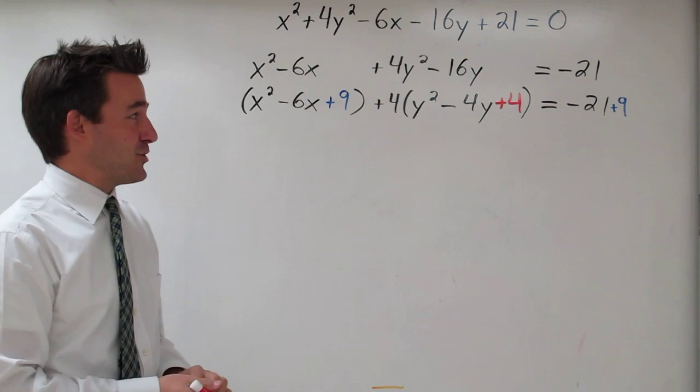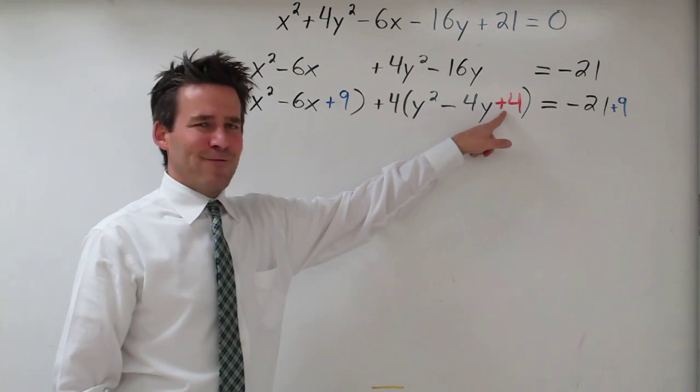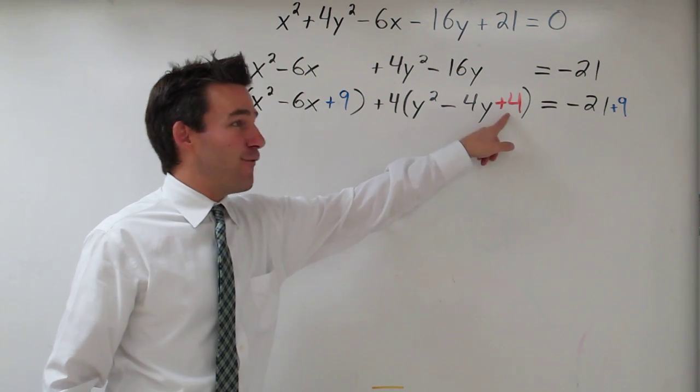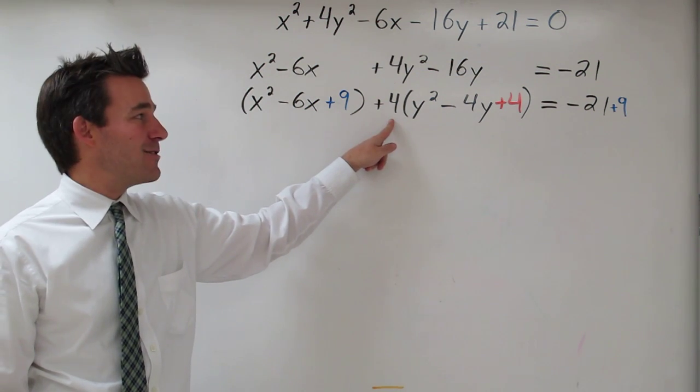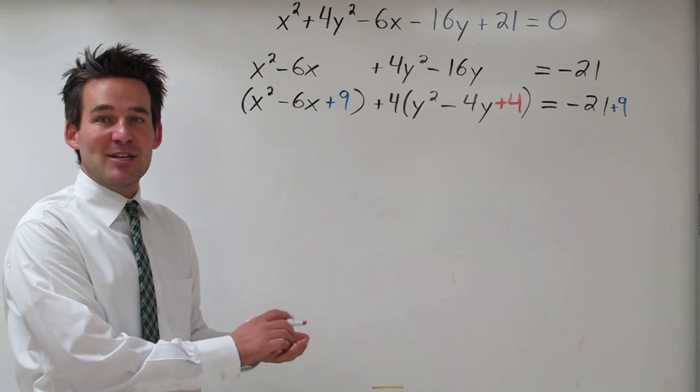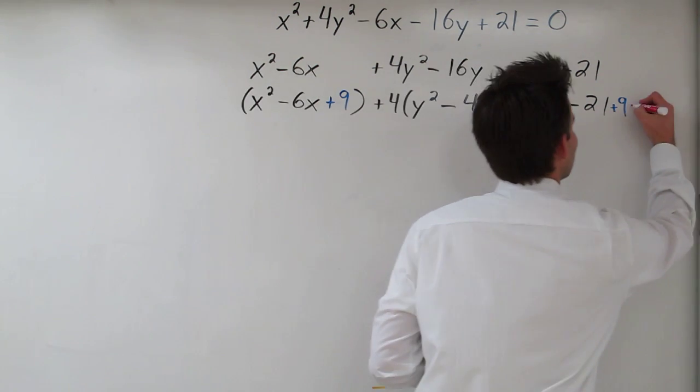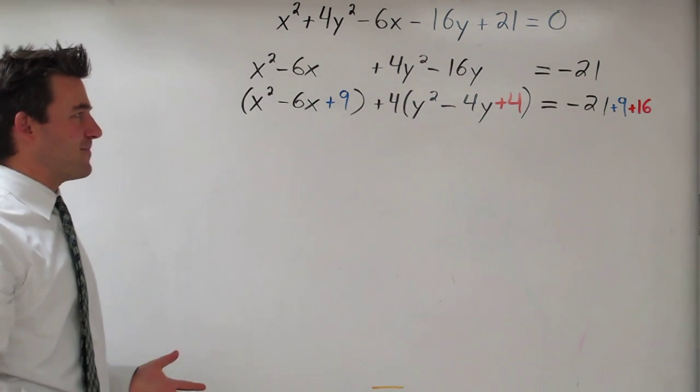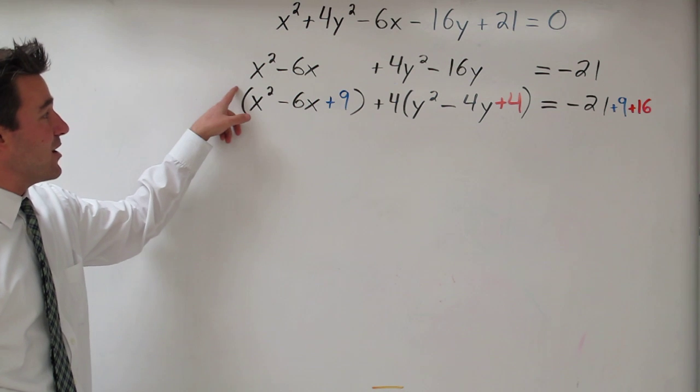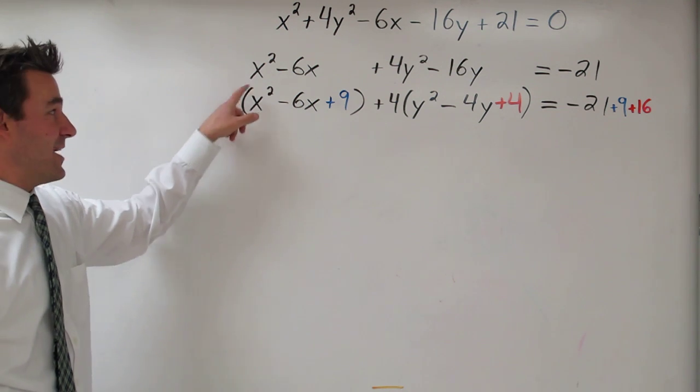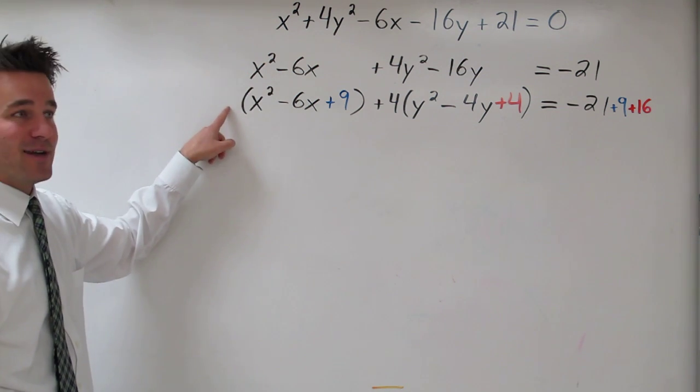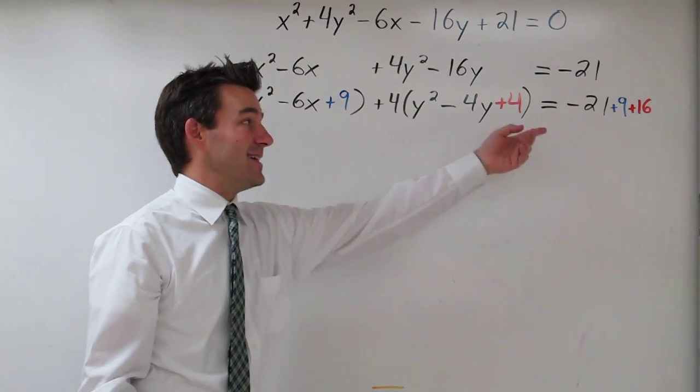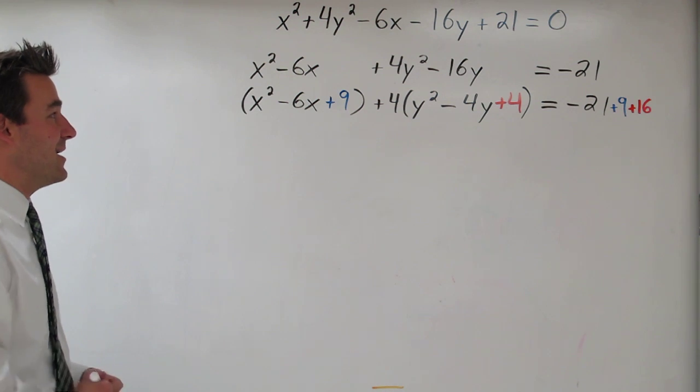And here's something kind of tricky. When I added 4 to this side, I didn't actually add 4. I added 4 times the 4 that I factored out. So what I ended up actually adding is 16. So let's add a 16 to this side. So why didn't that happen here? Well, because we had a 1 on the outside. Our coefficient of the x squared term was 1. 1 times 9 is 9, so I just added 9. 4 times 4 is 16, so I had to add a 16 to that side.